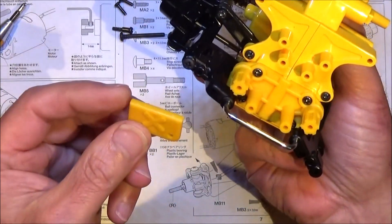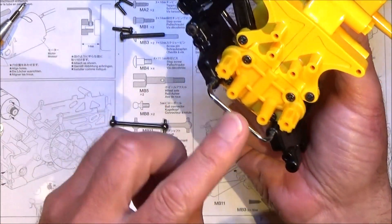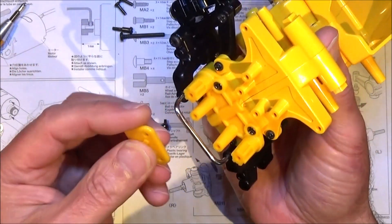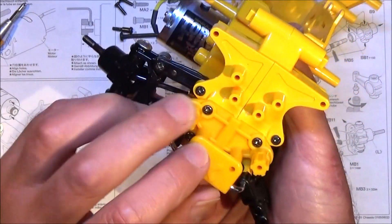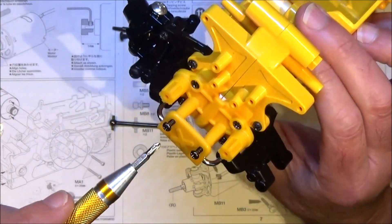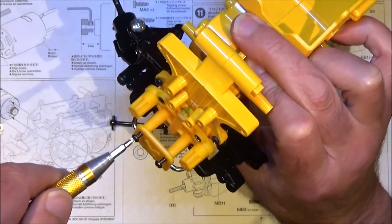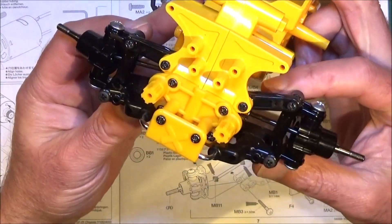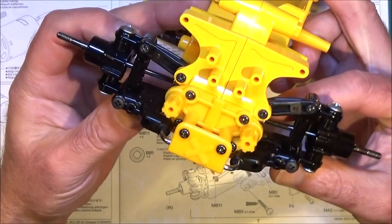It should look something like this. Obviously do exactly the same for the other side. Then get part F4 which is this part which will hold that U-shaped bar in place. It just goes on there with your two 10mm screws. When you finish step 11, it should look something like this.